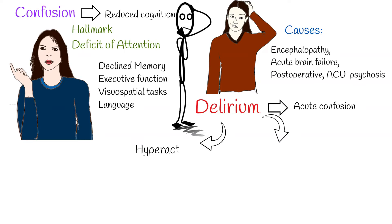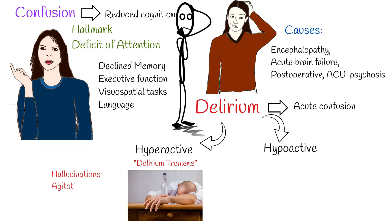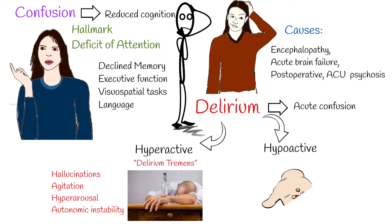Delirium is described as hyperactive and hypoactive based on differential psychomotor features. Severe alcohol withdrawal is the classical example of the hyperactive subtype of delirium, a condition also called delirium tremens. It is characterized by prominent hallucinations, agitation, and hyperarousal, often accompanied by life-threatening autonomic instability.